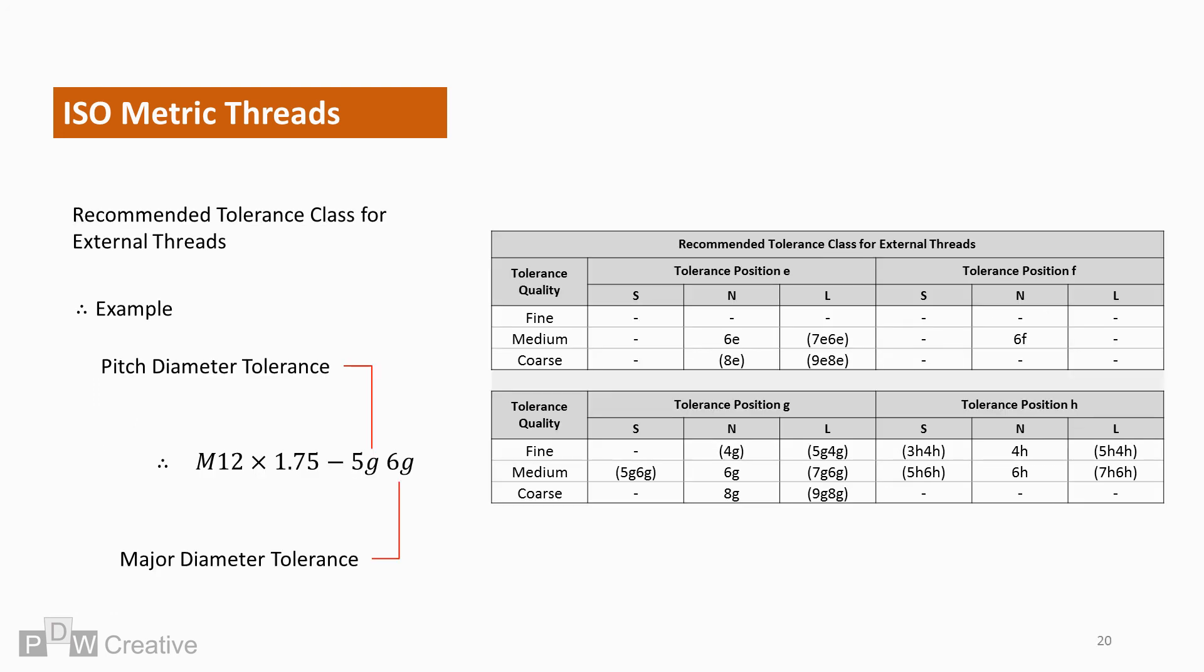So, just to round up, let's pull all the information together. Both external and internal threads have a preferred tolerance class depending on whether short, normal and long thread engagement is selected. They also depend on whether fine, medium or coarse pitches are selected.